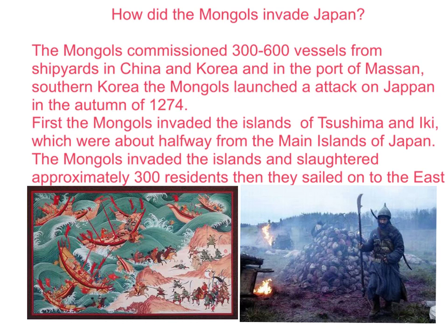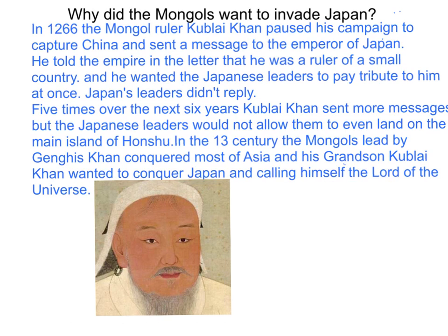Why did the Mongols want to invade Japan? In 1266, the Mongol ruler Kublai Khan paused his campaign to capture China and sent a message to the Emperor of Japan. He told the Emperor in a letter that he was the ruler of a small country and wanted the Japanese leaders to pay tribute to him at once. Japanese leaders didn't reply. Five times over the next six years, Kublai Khan sent more messages, but the Japanese leaders would not allow them to even land on the main island of Honshu.